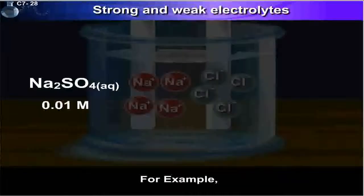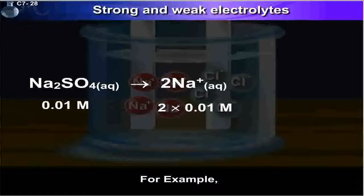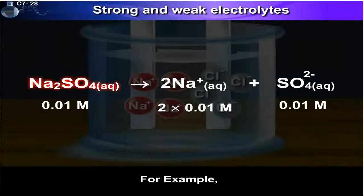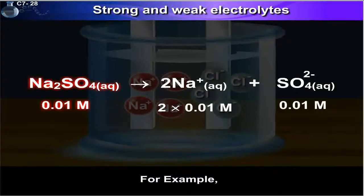For example, Na2SO4 gives two Na+ plus SO4^2-. Here, the concentration of Na2SO4 is 0.01 moles, concentration of two Na+ is 2 into 0.01 moles, and concentration of SO4^2- is 0.01 moles.